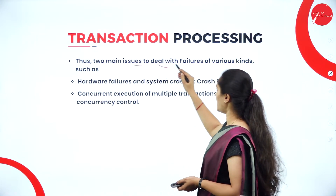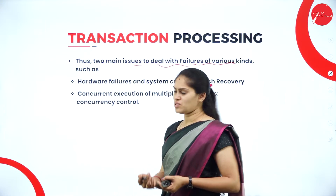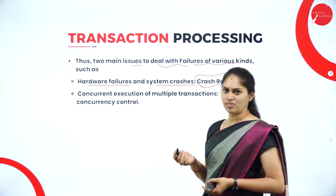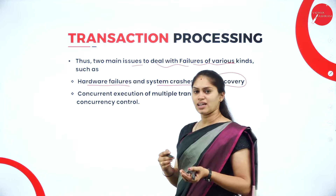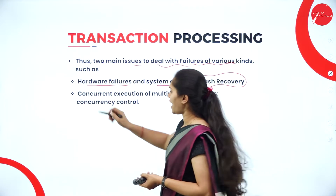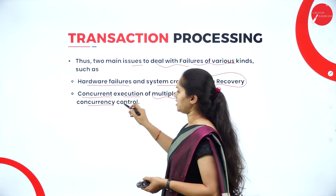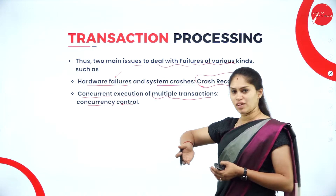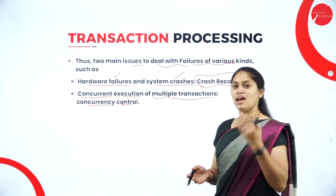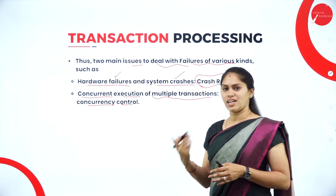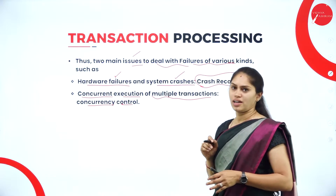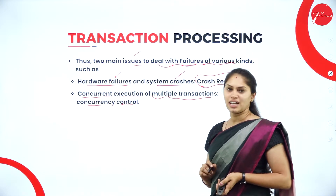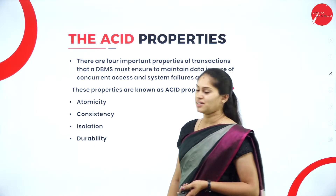The main issues in transaction management deal with failures of various kinds: hardware failures, system crashes, or concurrency control being out of control. When failures occur, crash recovery is required. Concurrent execution of multiple transactions may need concurrency control. Both hardware failures and system crashes are major issues in DBMS transaction management.